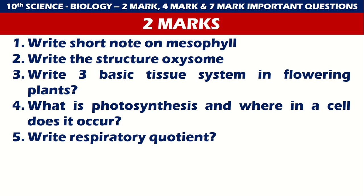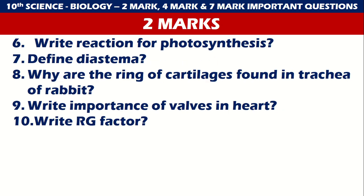Write a short note on mesophyll. Write the structure of xylem. Write the three basic tissue systems in flowering plants. What is photosynthesis and where in a cell does it occur? Respiratory quotient — this is treated to be a very important question; the respiratory quotient is asked regularly.